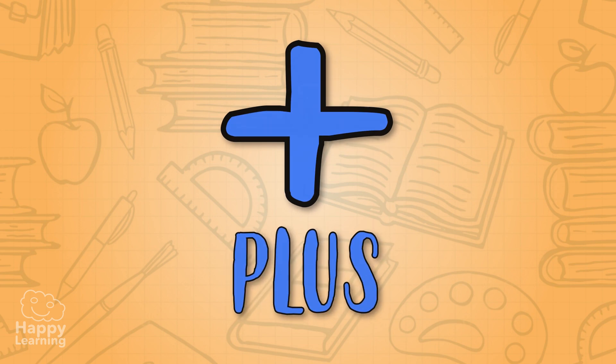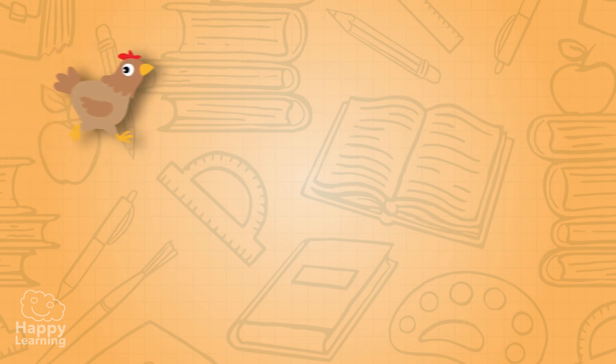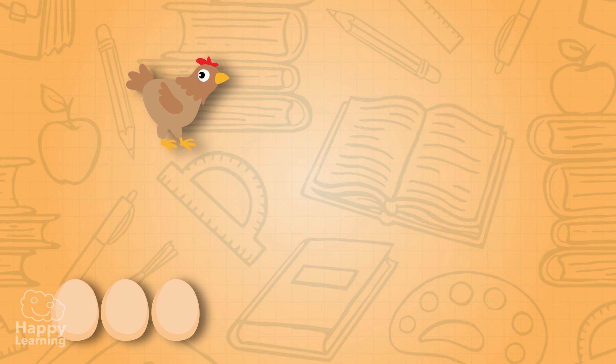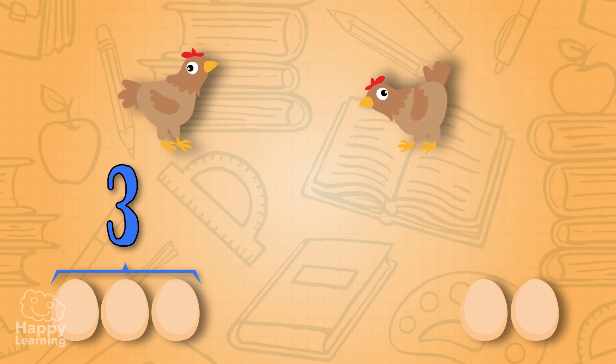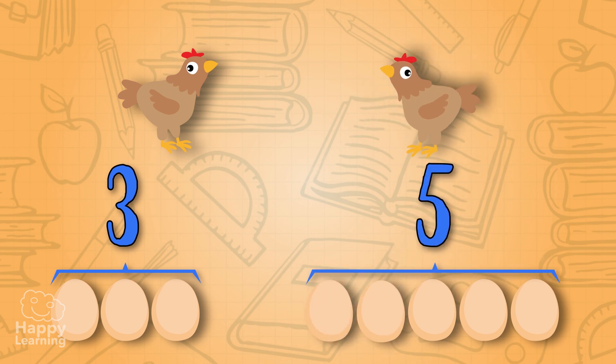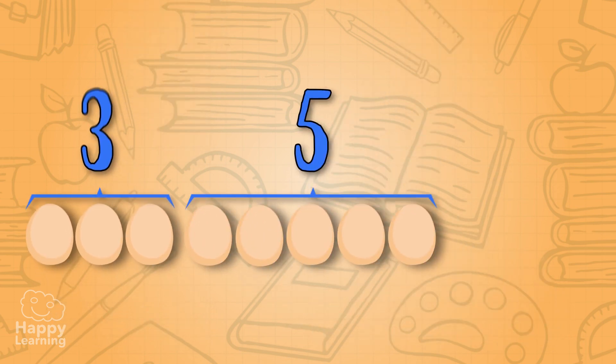Let's do another example. If a chicken lays three eggs, another chicken lays five eggs. How many eggs do we have in total? Let's see.